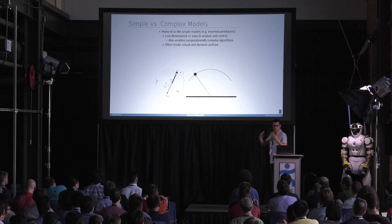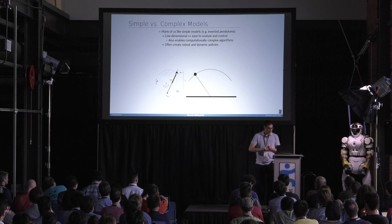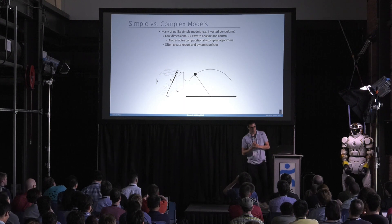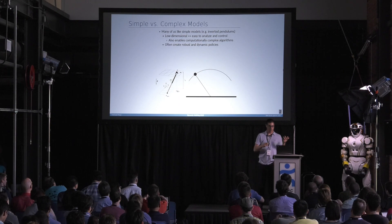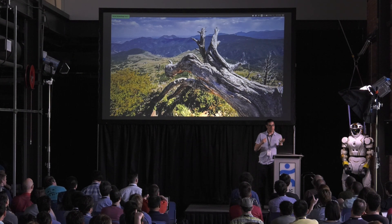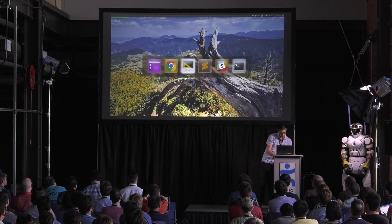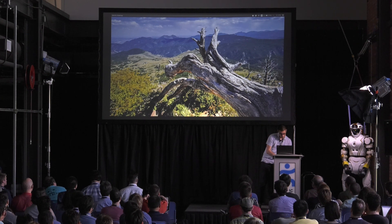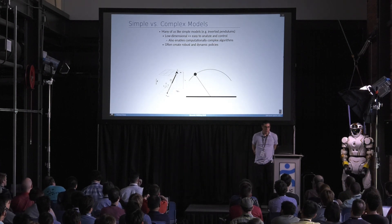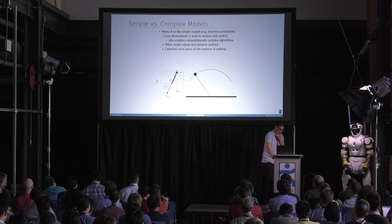Thanks. Alright, so a lot of people in the room really like simple models. I would count myself among that group now. They're, like a lot of people have said, very low dimensional, often easy to analyze and control, and easy can mean a lot of things. Maybe what Andy said - I think I take a slightly more expansive view of easy. But things like brute force can often work, or even fancy control algorithms can work if we have these easy models. Things like inverted pendulum. They're often very robust, and I think at some high level these simple models have captured some intrinsic part of walking, right? These inverted pendulum models have really discovered something.